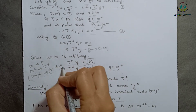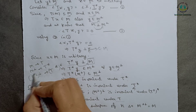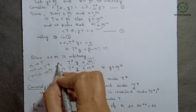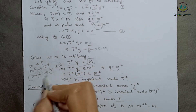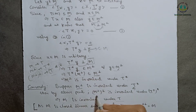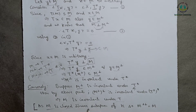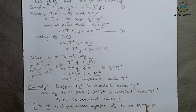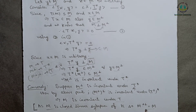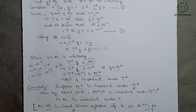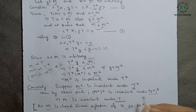This is true for every element, so it is true for the whole set. That is, T*(M orthogonal) is a subset of M orthogonal. We also use the fact that T double star equals T.